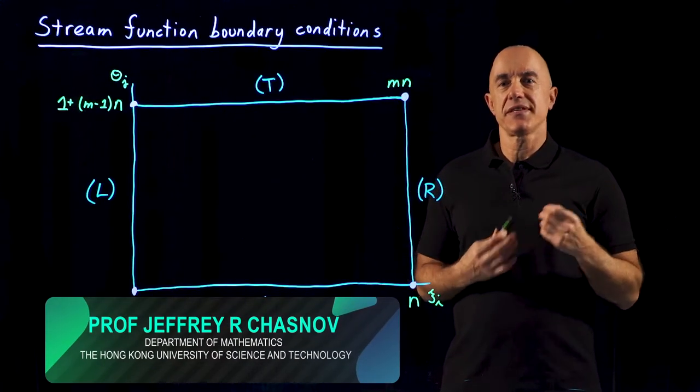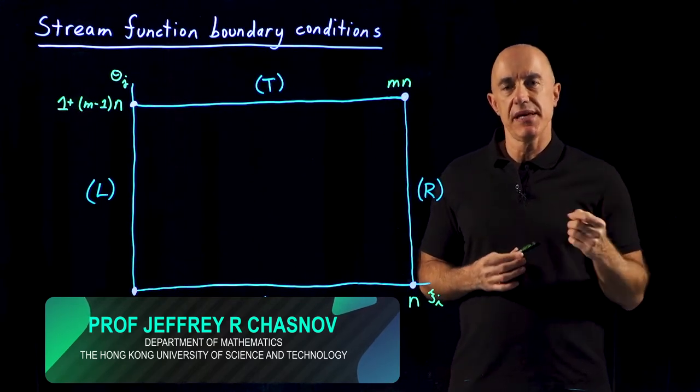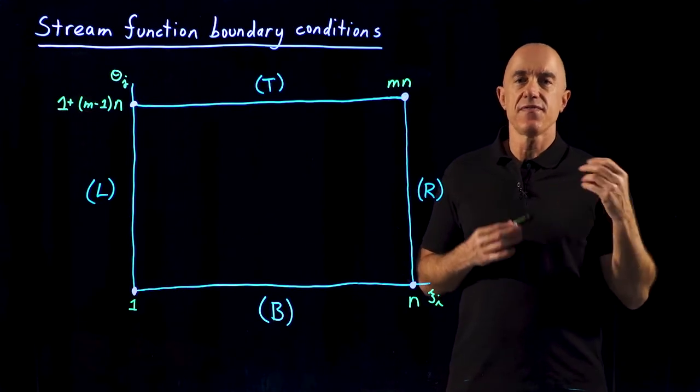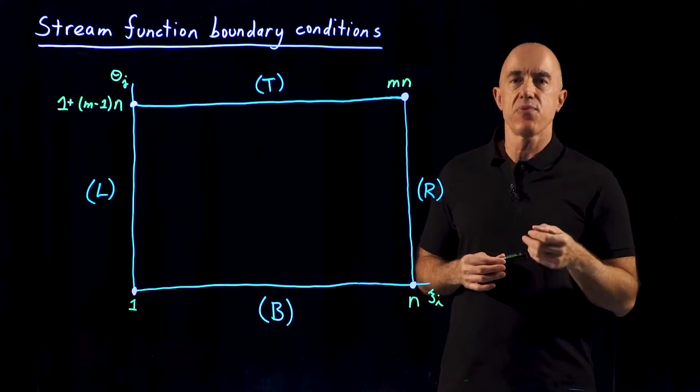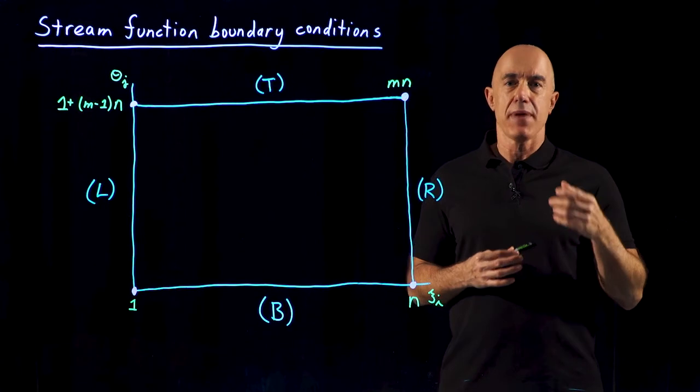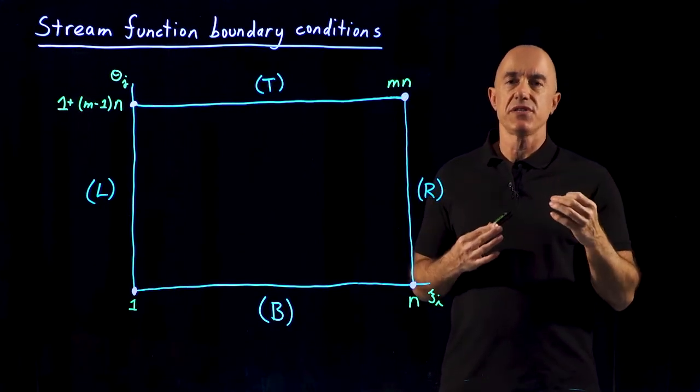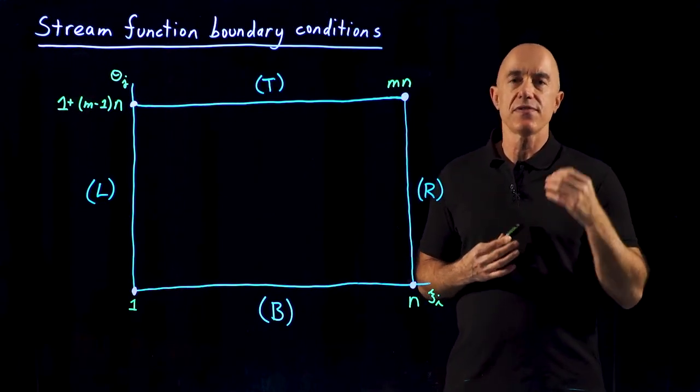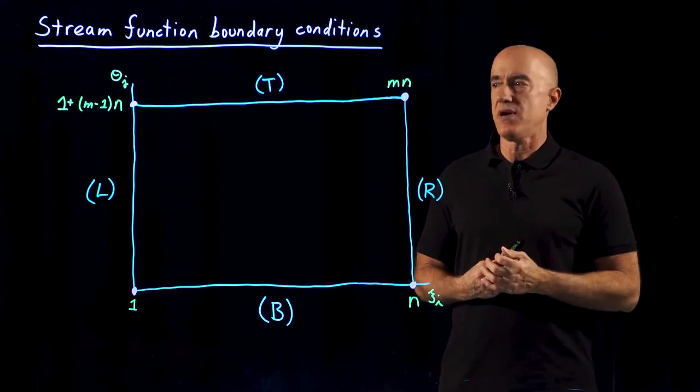We're solving a matrix equation for the stream function, A psi equals B, where psi is a column vector consisting of the values of the stream function on all the points of the grid, the interior points and the boundary points. A is an MN by MN matrix. We've written the equations for psi on the interior points, so now we have to discuss the equations for the stream function psi on the boundary points.